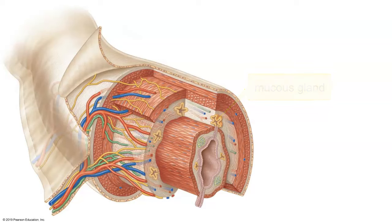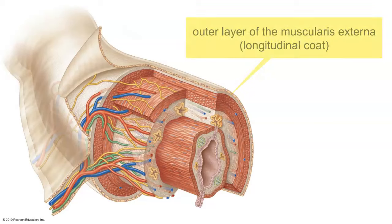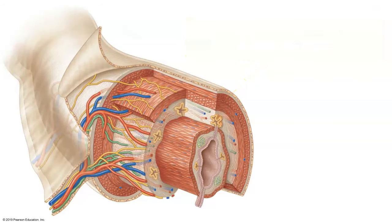Deep to that is the layer of muscle — this is smooth muscle, found from the lower two-thirds of the esophagus through the internal anal sphincter. There are at least two layers of smooth muscle. The inner layer is a circular coat, with cells encircling the lumen and circling the hollow tube. The outer layer is called the longitudinal coat because the orientation of the muscle cells runs along the longitudinal axis of the tube.